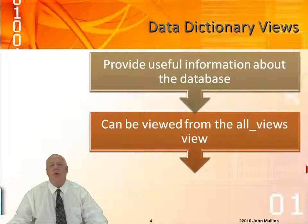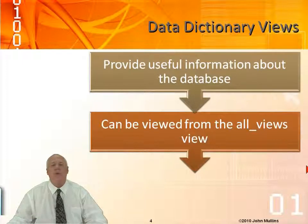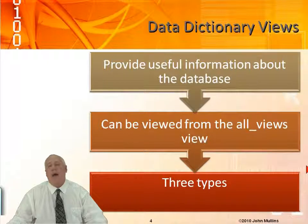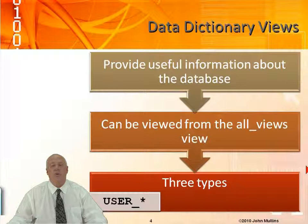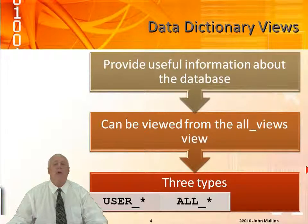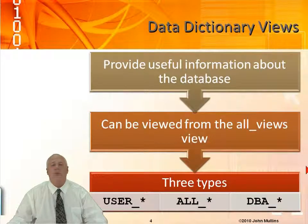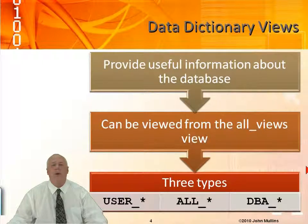A lot of times if you go to Oracle trade shows or conferences, there will be vendors selling or giving away posters that have all these views on them to help you identify and navigate them. There are basically three types we're concerned with: a view name that starts with user_, a view name that starts with all_, and a view name that starts with dba_. We'll talk about each one throughout this module, and in the demonstration module you'll see how to use all three.